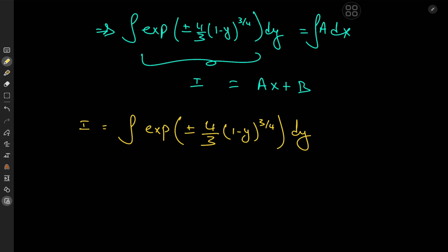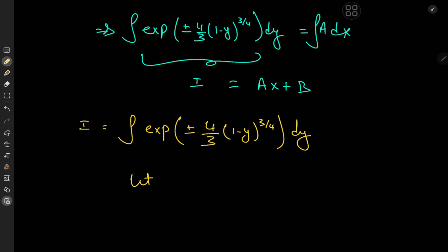To evaluate this integral, let's set the argument of the exponential — that is (4/3)(1 minus y)^(3/4) — equal to t. Differentiating gives (4/3) · (3/4) · (1 minus y)^(−1/4) dy = dt.